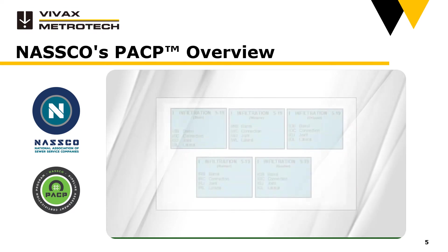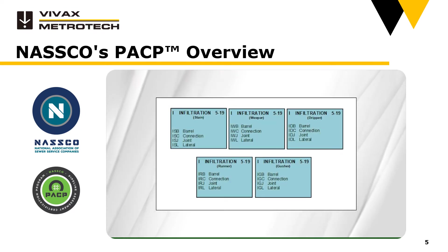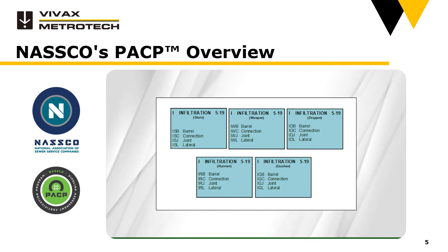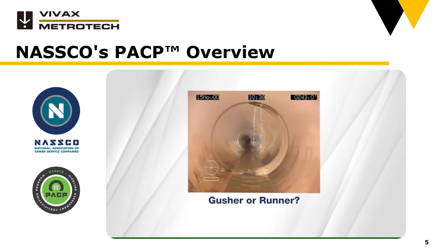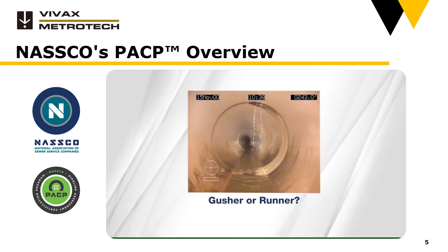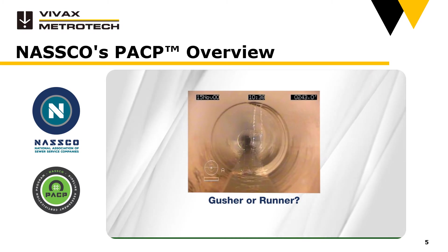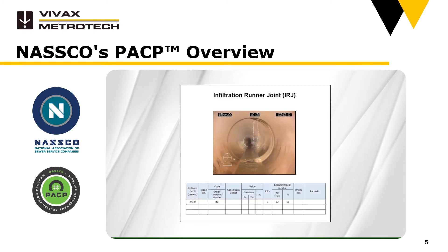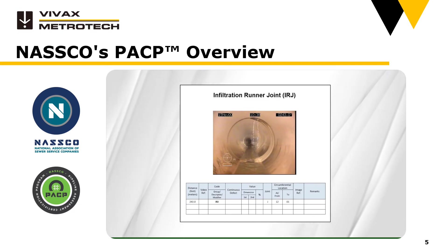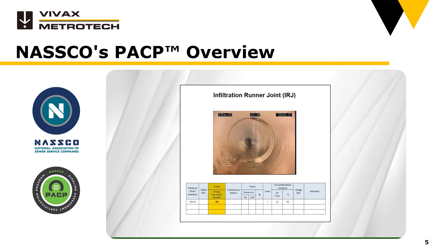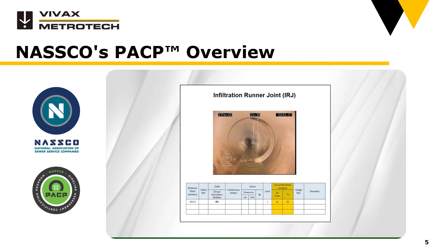Also from the O&M family of codes is infiltration, represented by the letter I. Infiltration occurs when groundwater enters into the pipe through a defect or porous area. How did you do on the second quiz from earlier in the video? In this example, we have a steady stream of water entering at a joint, so we'll code it as IRJ, which stands for infiltration runner joint, from 12 to 1.